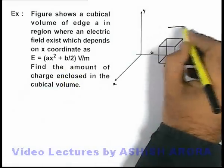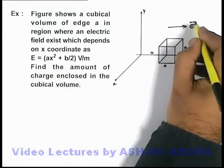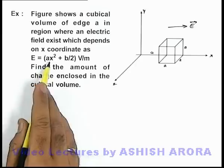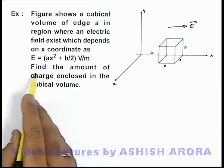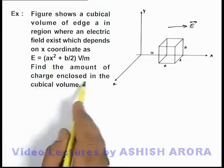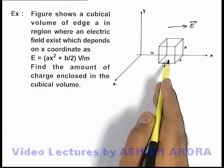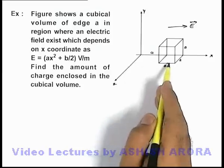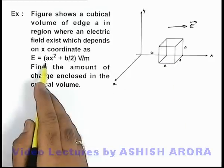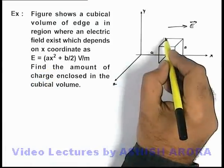In this situation, if an electric field exists in the x direction which depends on position coordinate, we are required to find the amount of charge enclosed in this cubical volume. For this cubical volume, we can see that the electric field is increasing with x.